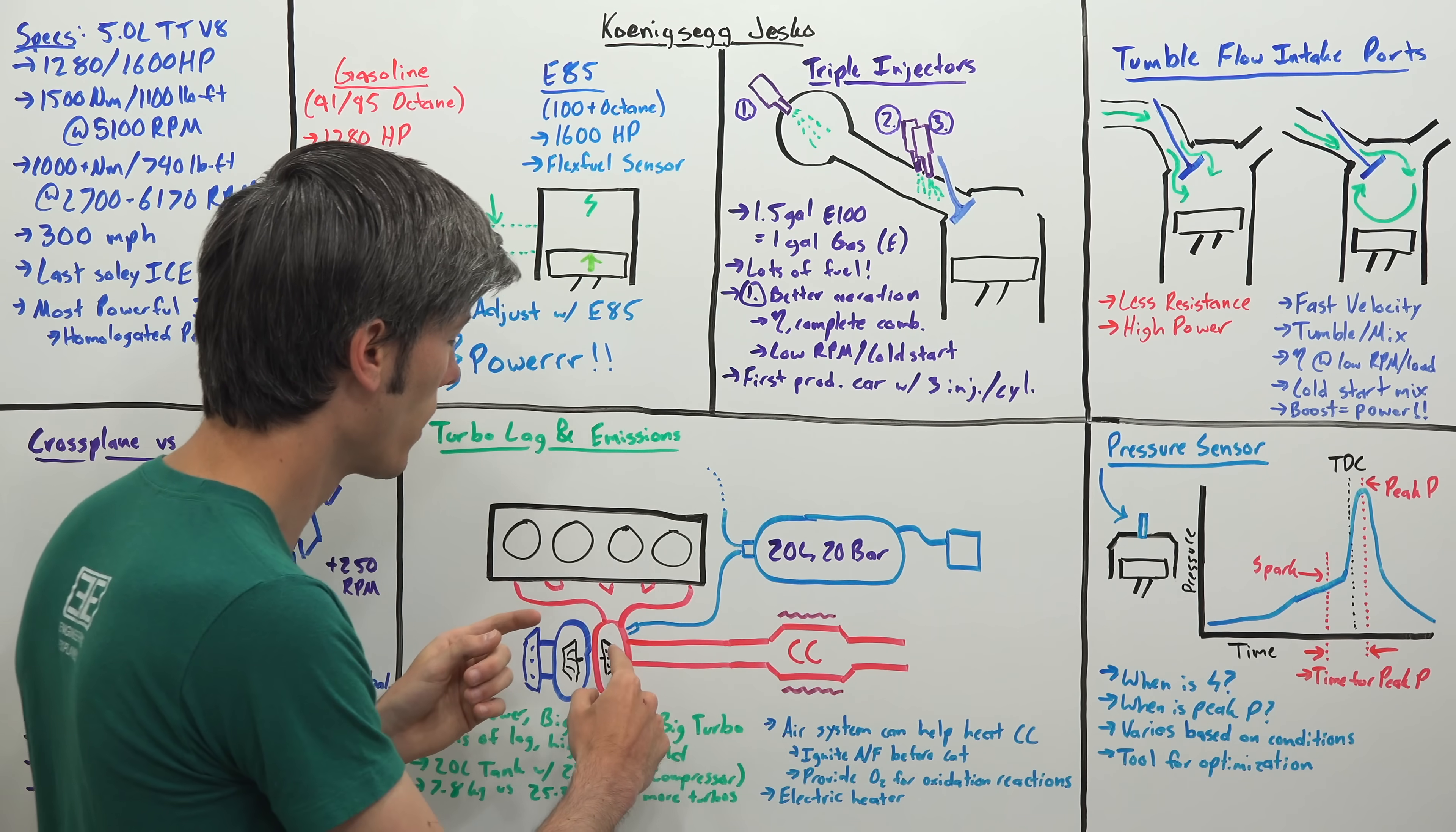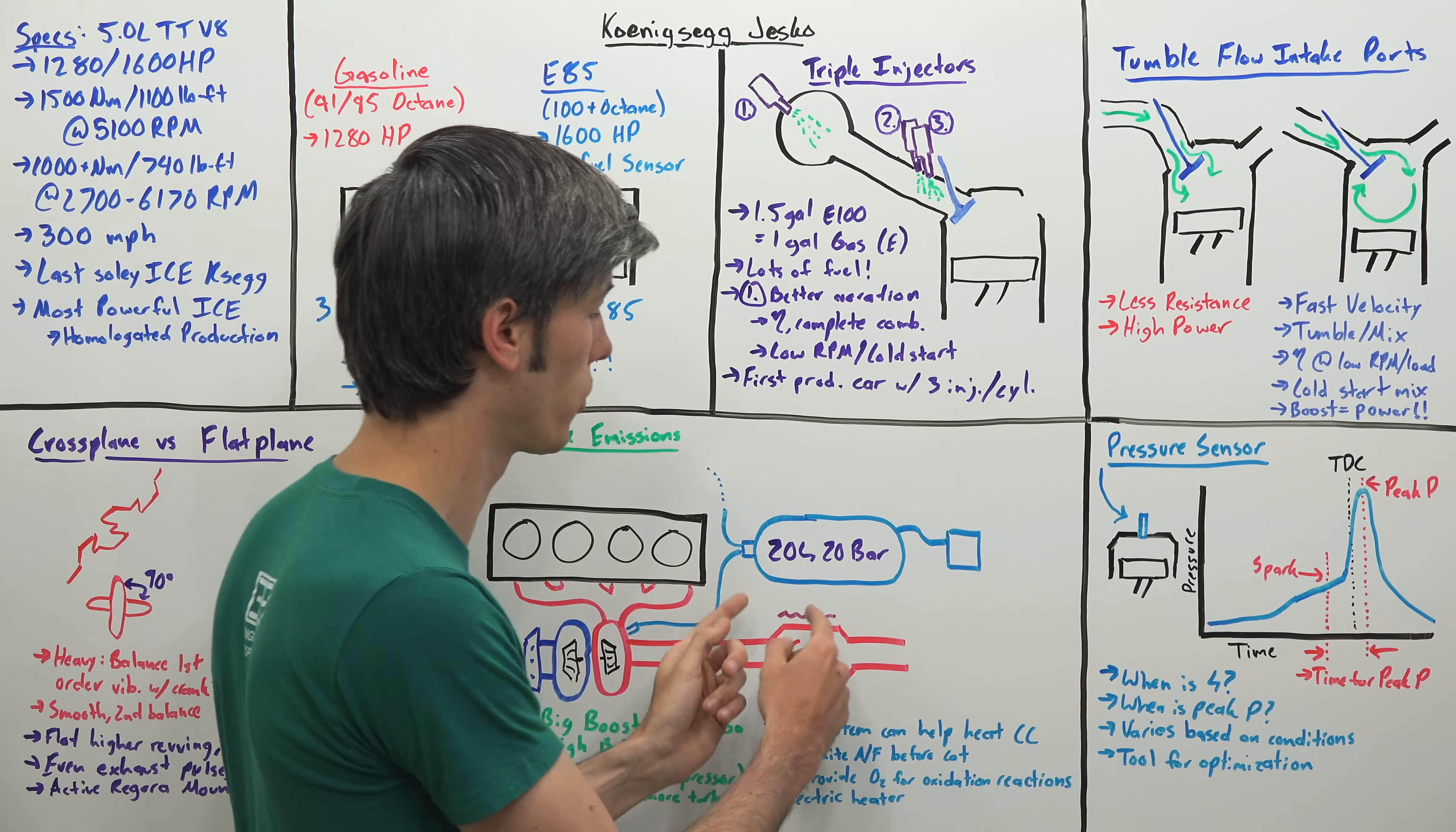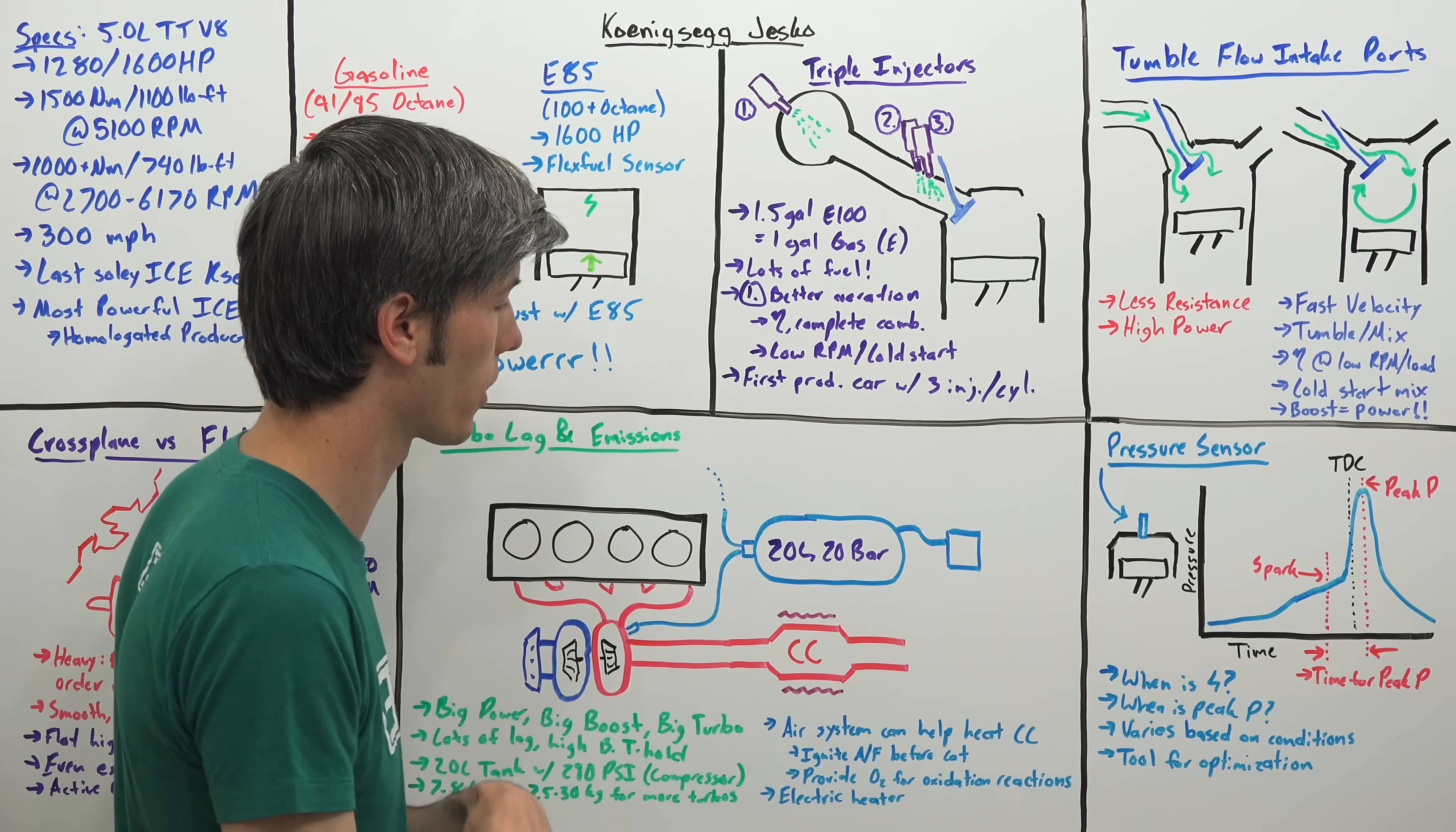By injecting that air into the exhaust, you're introducing oxygen into the exhaust. If there's any fuel remaining, that means you can burn that air and fuel before it reaches the catalytic converter and help heat it up that way. It also means you're providing oxygen for the catalytic converter which can use that oxygen for oxidation reactions within the catalytic converter which create heat. On top of all of this, they have an electric heater within the catalytic converter to also help warm it up once you're starting the car.